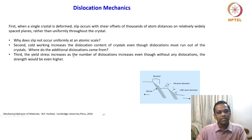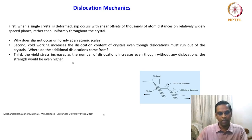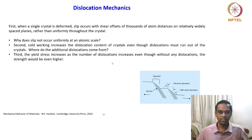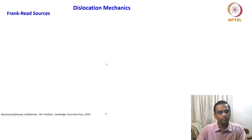Third, the yield stress increases as the number of dislocations increases, even though without any dislocations the strength would be even higher. This is something you have a clue about now, because at the beginning of the dislocation chapter we looked at the theoretical value of bond strength. Even without dislocations the strength must be very high, but the yield strength increases as the number of dislocations increases. Why does increasing dislocation density influence the yield stress? To answer these kinds of questions, dislocation mechanics is looked at more critically.